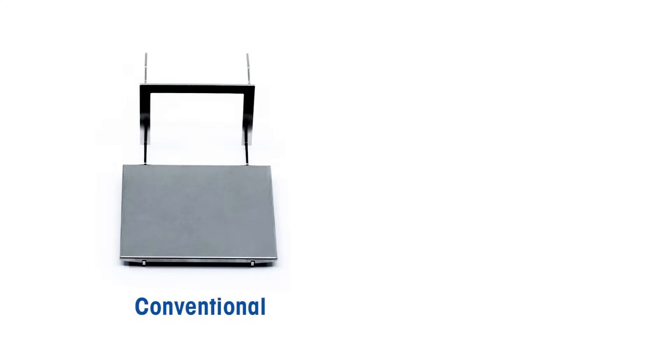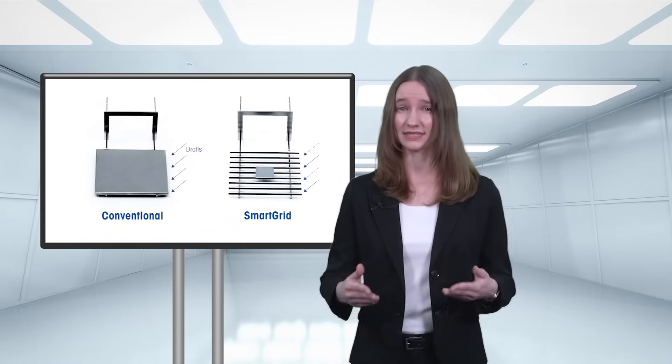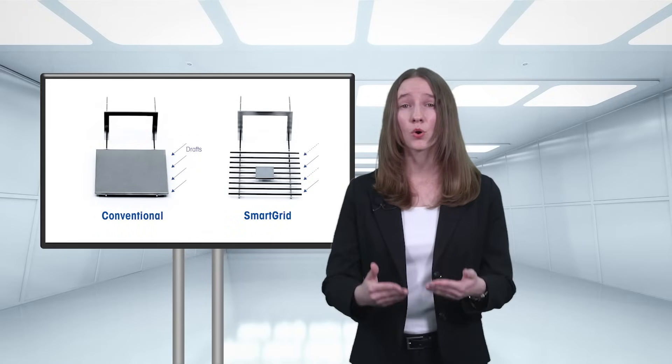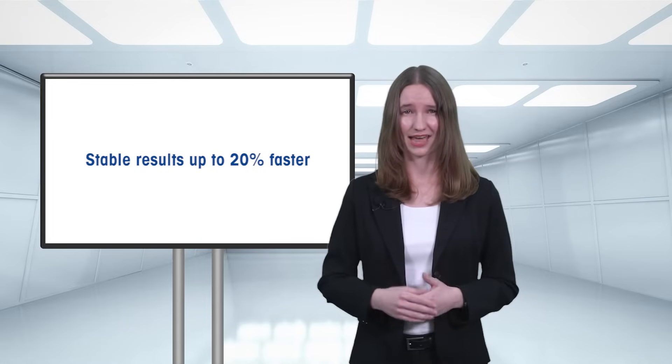Compared to conventional weighing pans, the grid structure has less surface for destabilizing air turbulence to act on. With this technology, you will get more stable results up to 20% faster, boosting productivity in your lab.